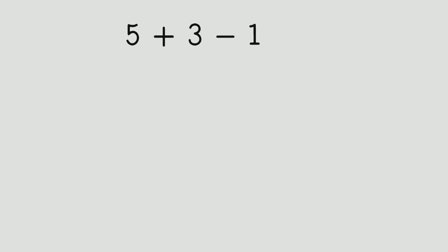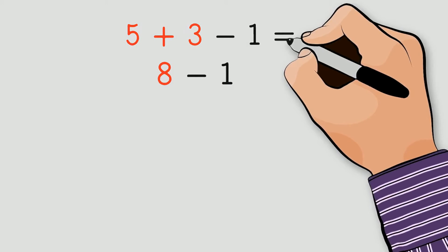5 plus 3 minus 1. We know that to solve this expression, we start by adding 5 plus 3, and then subtracting 1, giving us 7 as the result.